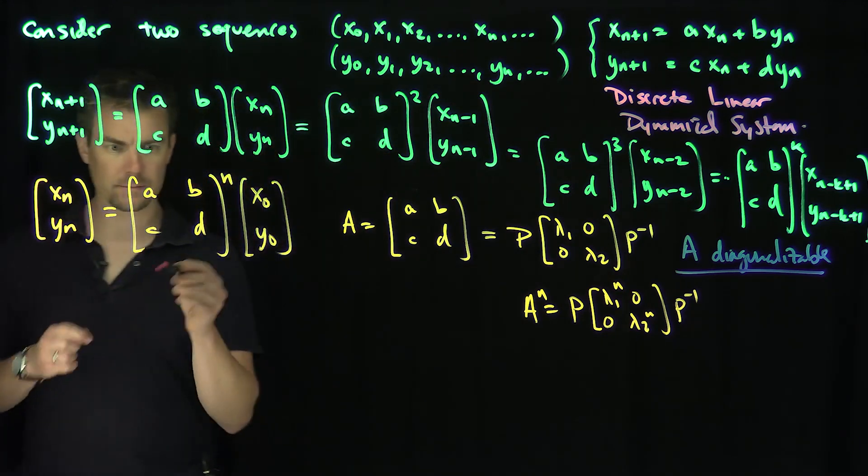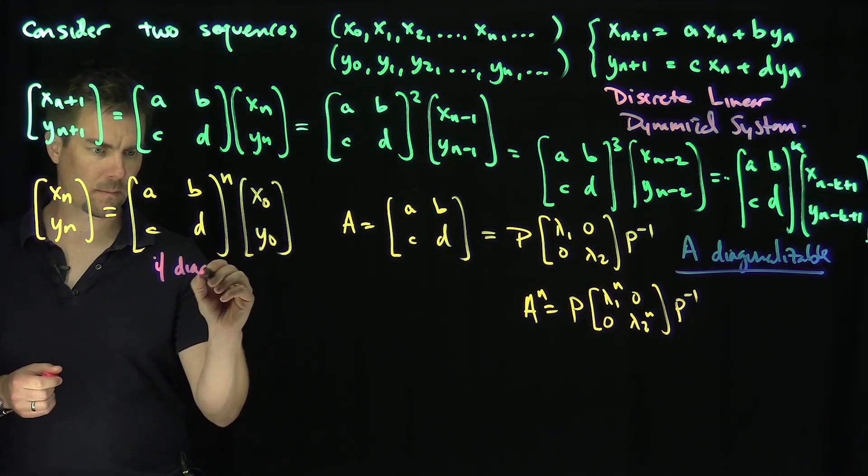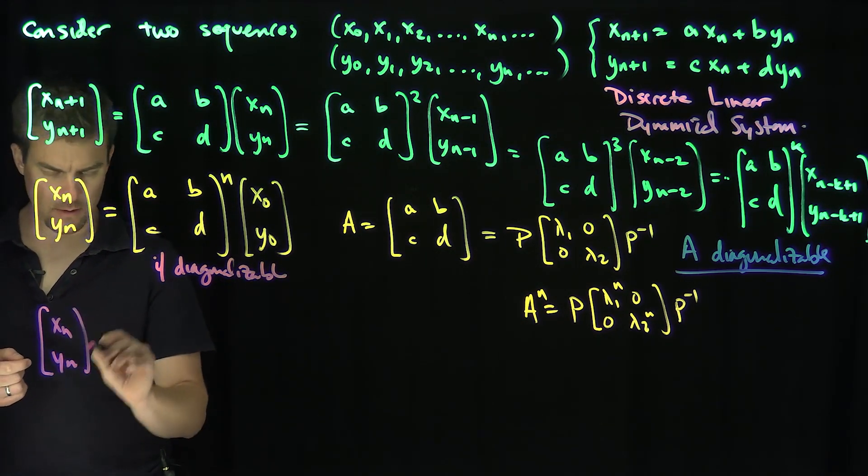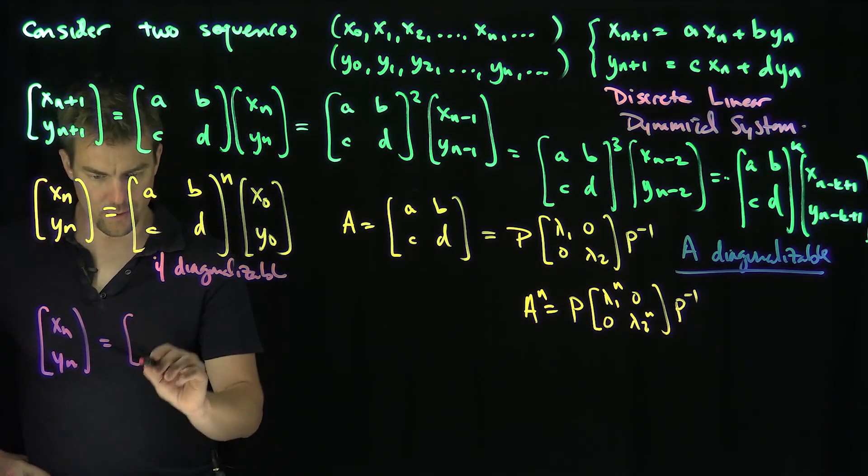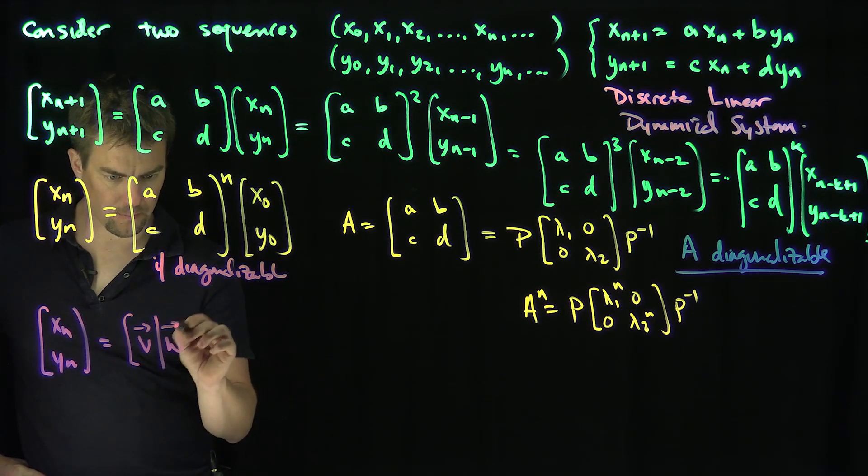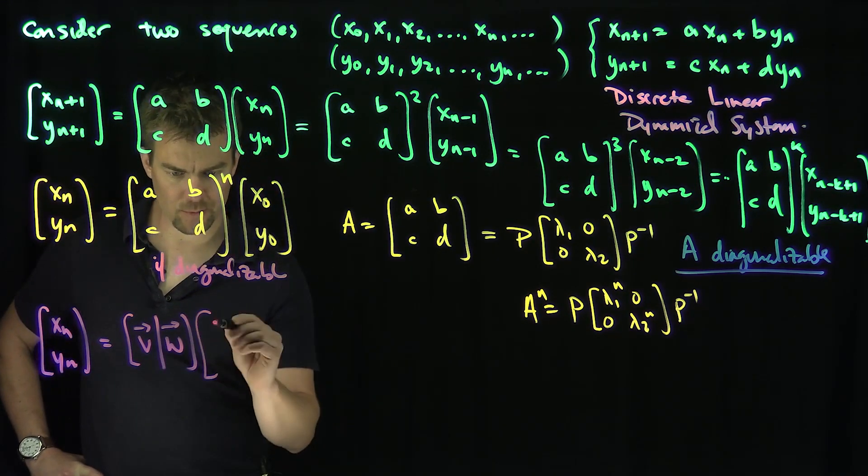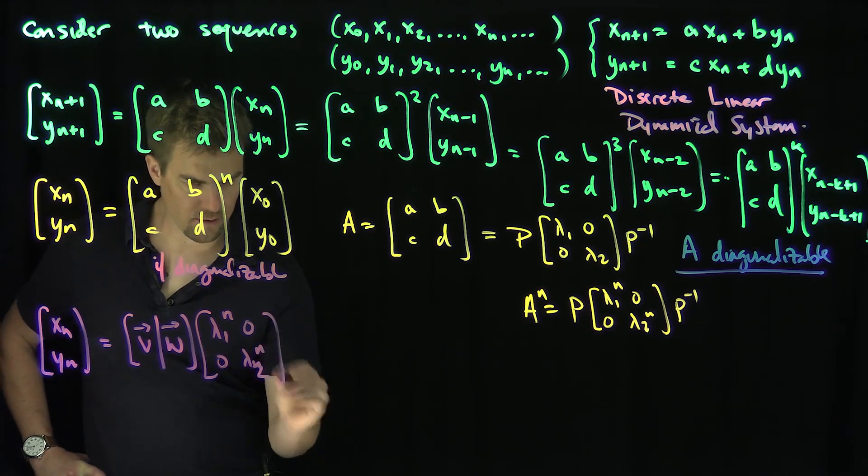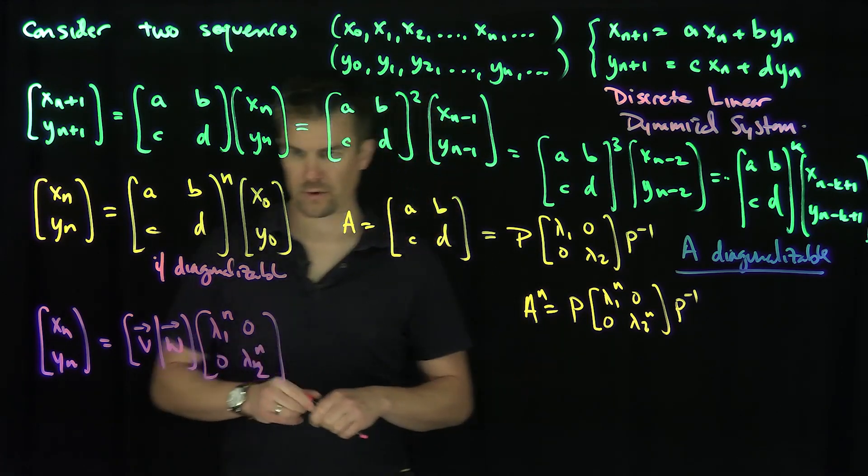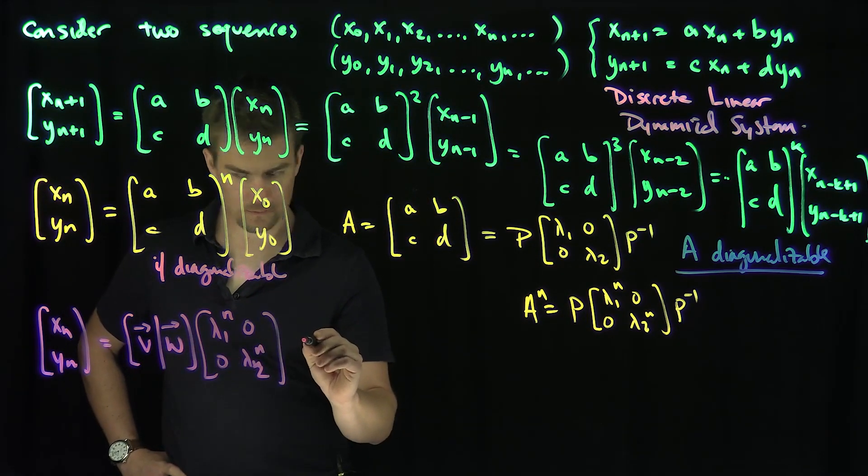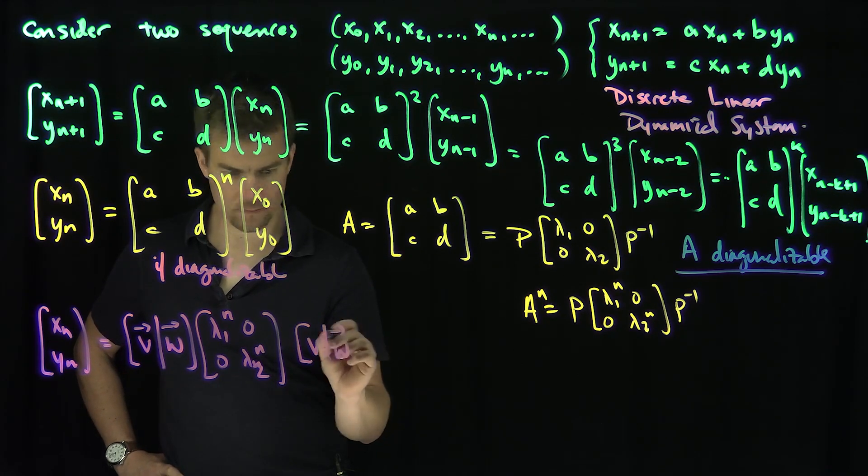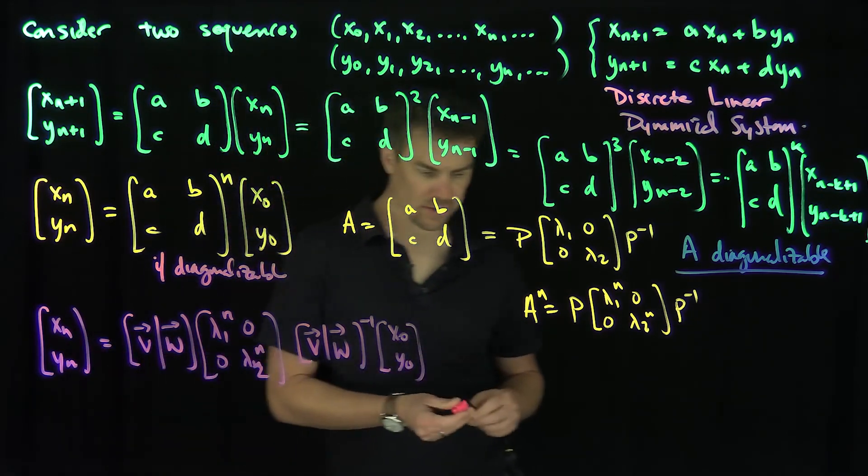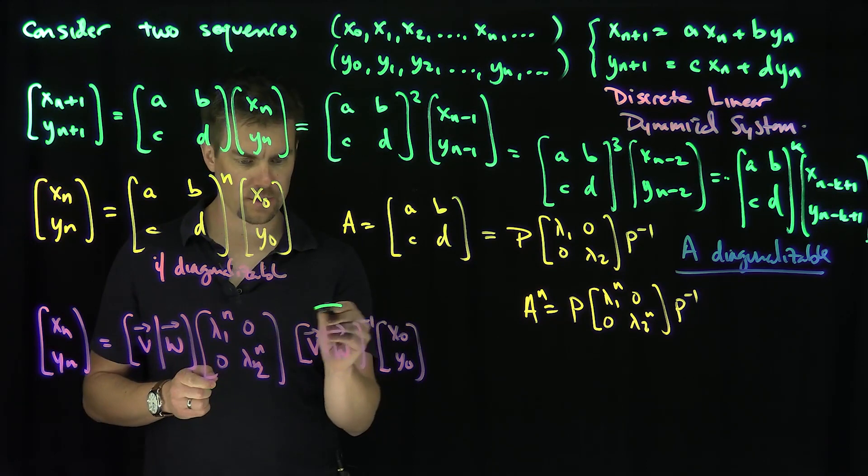So if A is diagonalizable, the conclusion therefore is that x n, y n is equal to P, which I'm going to write as VW, and then lambda 1 to the power of n, 0, 0, lambda 2 to the power of n, and then P inverse applied to the initial condition. So we're going to have VW inverse applied to x 0, y 0. And so this thing is going to turn into something new, which we're going to call x 0 tilde, y 0 tilde.